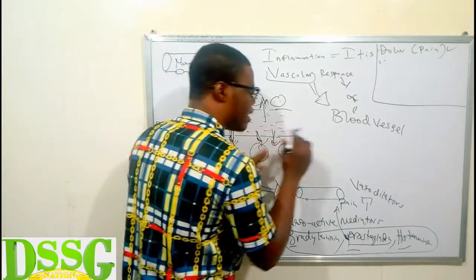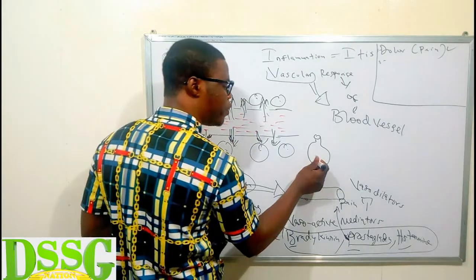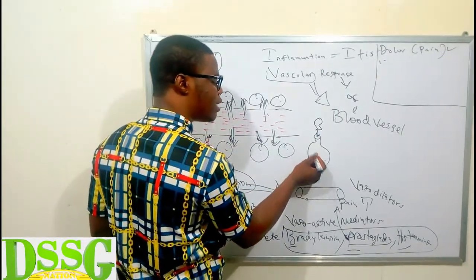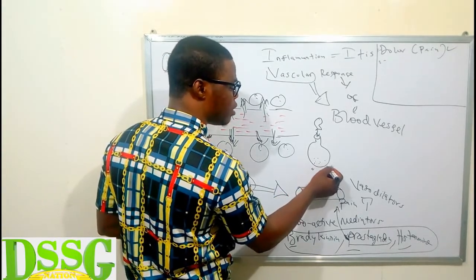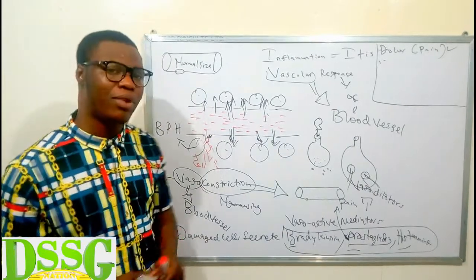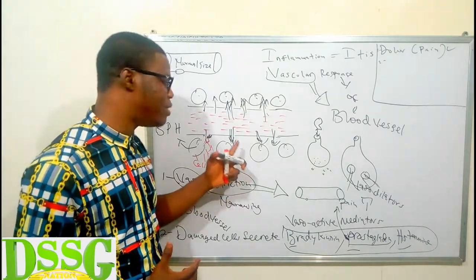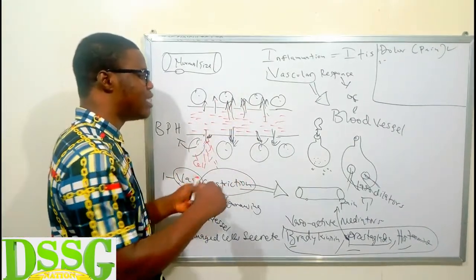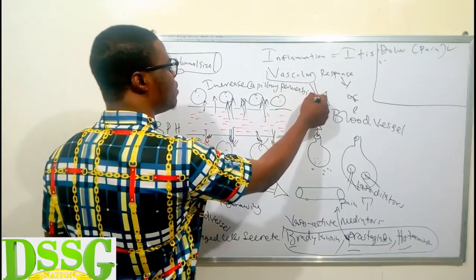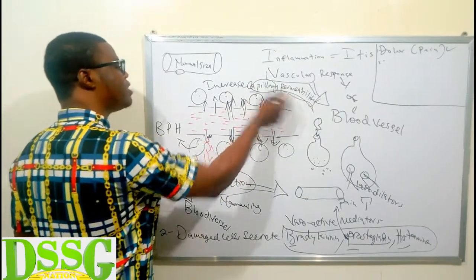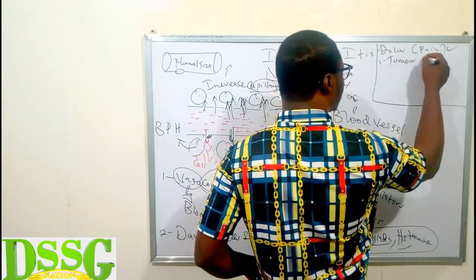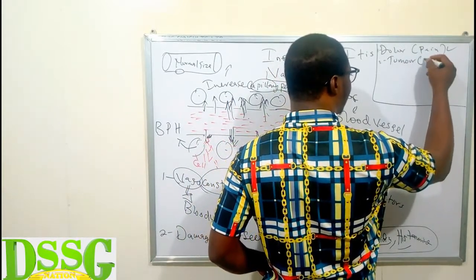An example: imagine a balloon pricked with a needle — water inside will escape as droplets. But if you inflate the balloon, the hole becomes bigger and water gushes out. That illustrates vasodilation to the damaged capillary bed. The pores increase, enhancing capillary permeability, allowing fluid to escape into the tissue spaces, and that leads to swelling — which is tumor, another cardinal sign of inflammation.